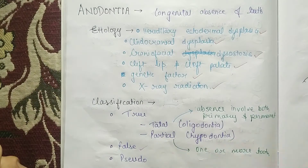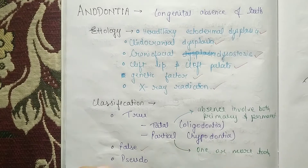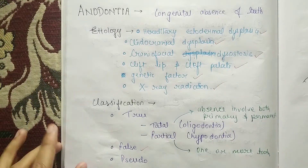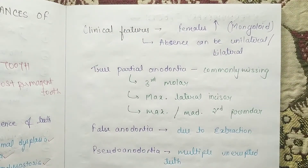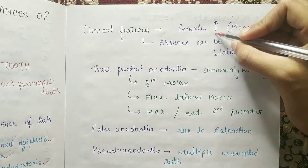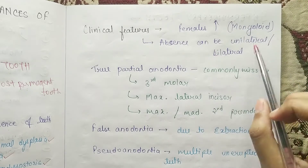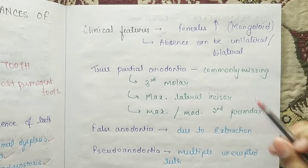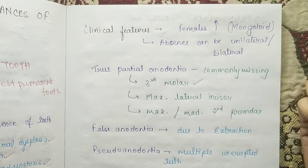In pseudo anodontia, multiple teeth are unerupted. Now coming to the clinical features — this condition is seen mainly in females with Mongoloid ancestors. Absence can be unilateral or bilateral.